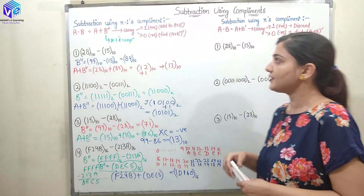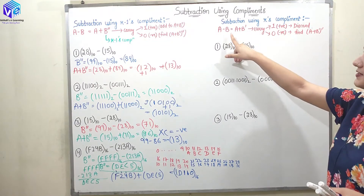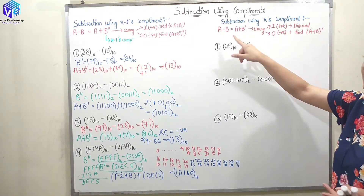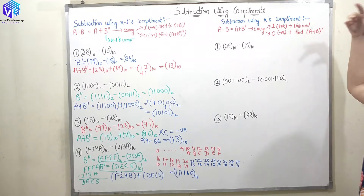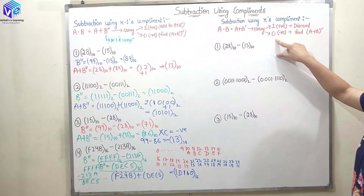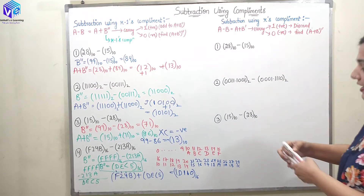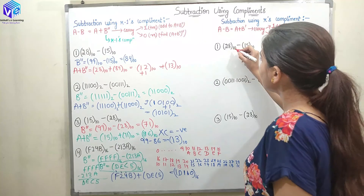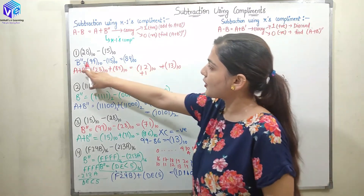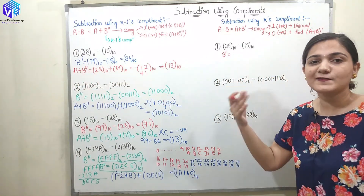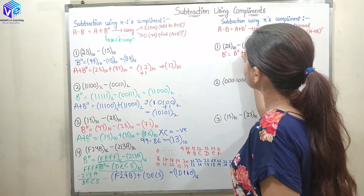Now we are going to do subtraction using the R's complement. The formula: to find out A minus B, we find the R's complement of B and check the carry. If the carry is 1, the answer is positive and we just discard the carry. If the carry is 0, the answer is negative and we find out the R's complement of A plus B dash. This is the simpler method. B dash equals B double dash plus 1.